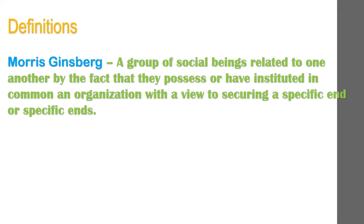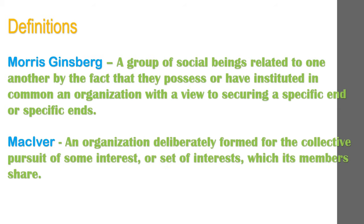Definitions of association: According to Morris Ginsberg, an association is a group of social beings related to one another by the fact that they possess or have instituted in common an organization with a view to securing a specific end or specific ends. According to MacIver, an association is an organization deliberately formed for the collective pursuit of some interest or sets of interests which its members share.